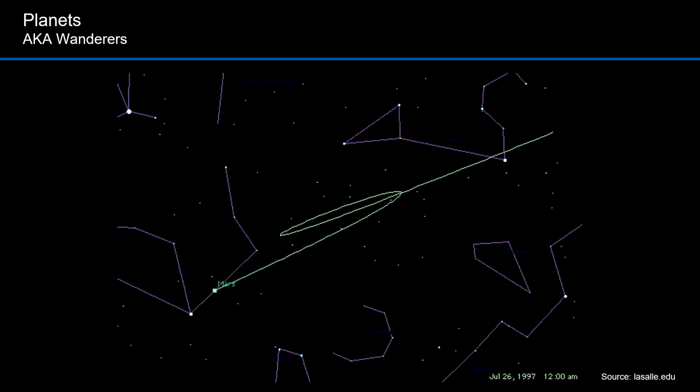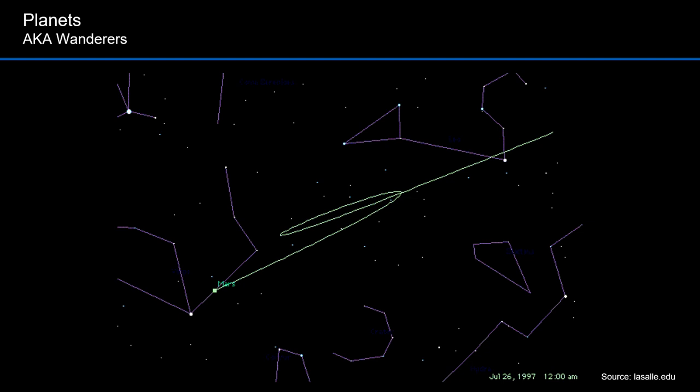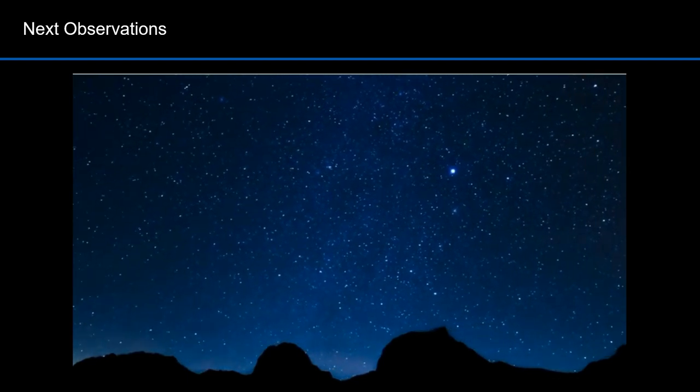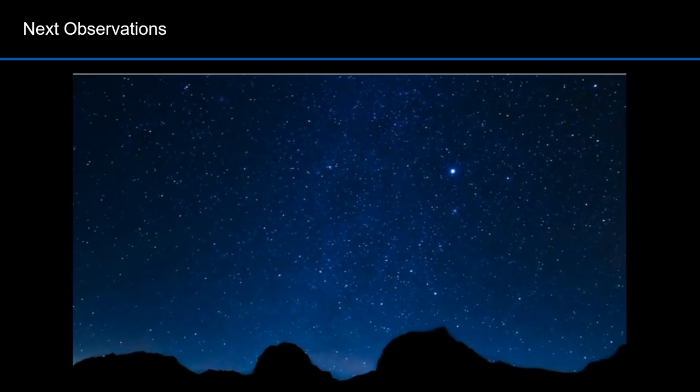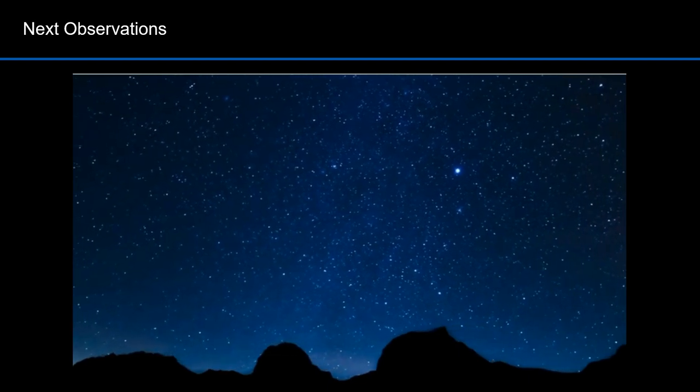This animation is the path of Mars against the stellar background from mid-October 1996 to late July 1997. Stars move east to west as the earth rotates. This is what they look like in the night sky sped up considerably.